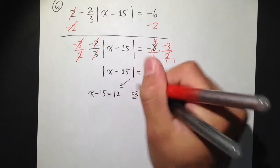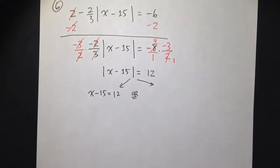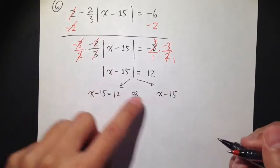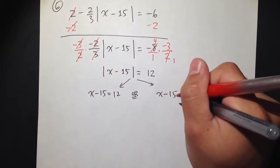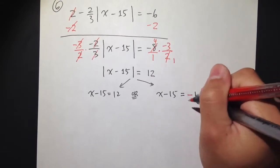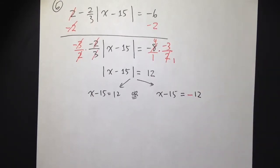Or the second case. The second case that we have to work with is, again, the inside, which is x minus 15, but then set this is equal to negative 12. And then we can just work out these two equations separately.